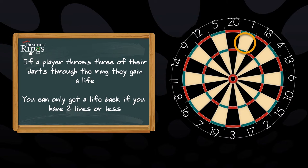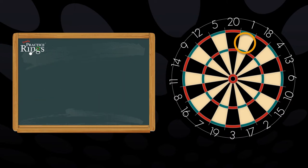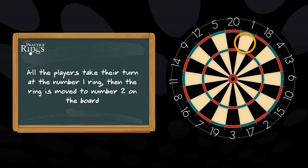All the players take their turn at the number one ring. Then the ring is moved to the number two position on the board.